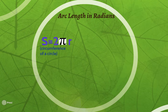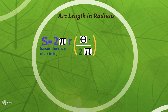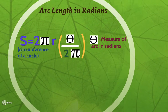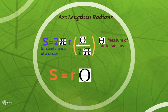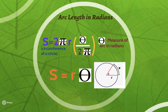We start with the circumference formula: circumference equals 2 pi R. Then we multiply by the fraction of the circumference we're dealing with — the arc's angle in radians, theta, over the full circle in radians, which is 2 pi. Notice that 2 pi appears in both the numerator and denominator, so they cancel out completely. That leaves us with S equals R times theta. So our arc length formula is simply S = Rθ, where theta is the measure of the central angle in radians.